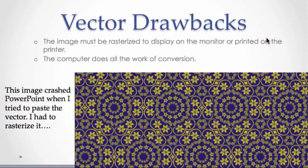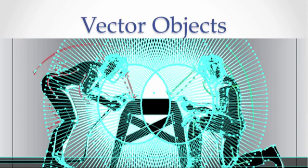The only drawback to designing in a vector format is that the image must be rasterized to be displayed on your computer monitor or printed on your home or office printer. As you may remember from our discussion of raster graphics, printers and monitors have raster graphics resolutions — the image is displayed on your monitor by activating pixels of colored light, and printers display little dots of colored ink on the page. The good news is the computer does all the work translating the vector instructions to the monitor or printer, so you don't have to be concerned with the conversion. As one example, when I tried to paste the vector bedsheet example, I crashed PowerPoint, so I had to rasterize it first in order for it to be pasted into the program.